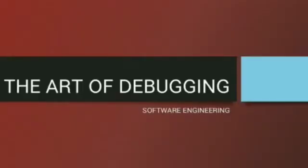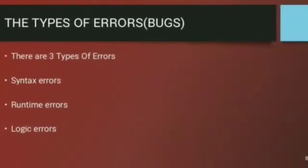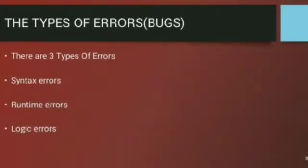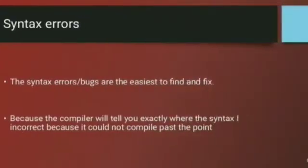Art of debugging in software engineering. The types of errors. There are three types of errors: syntax errors, runtime errors, and logic errors.